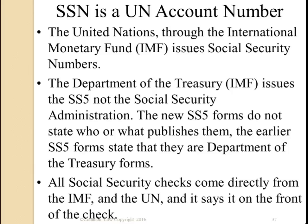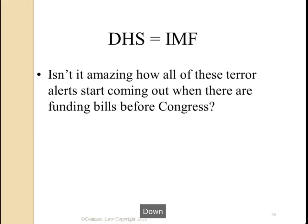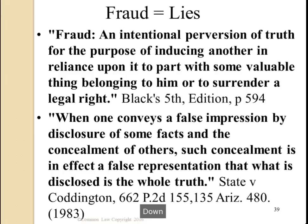The United Nations, through the International Monetary Fund, issues Social Security numbers. The Department of the Treasury issues the SS-5, not the Social Security Administration. The new SS-5 forms do not state who publishes them, but the early SS-5 forms state that they are Department of the Treasury forms. All Social Security checks come directly from the IMF and the UN — it says it on the front of the check. Isn't it amazing how terror alerts start coming out when there are funding bills before Congress for DHS?